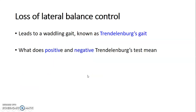When lateral balance control is lost, the patient develops a waddling gait or Trendelenburg gait. You conduct a Trendelenburg test: when you tell the patient to stand on one limb and the pelvis tilts, the Trendelenburg test is positive. When the pelvis does not tilt, the test is negative and lateral balance control is good.